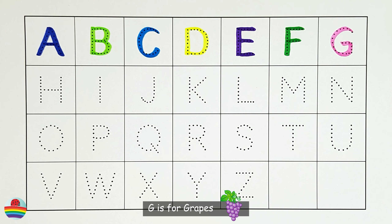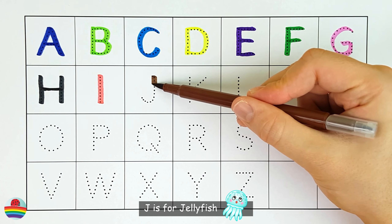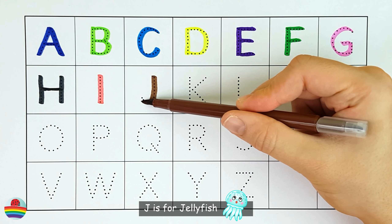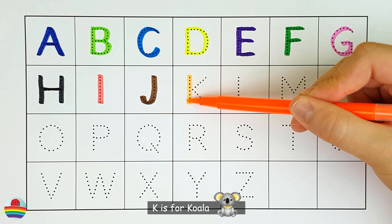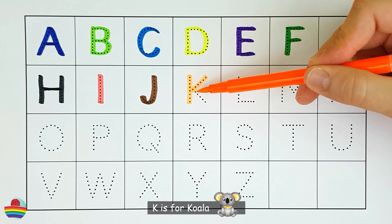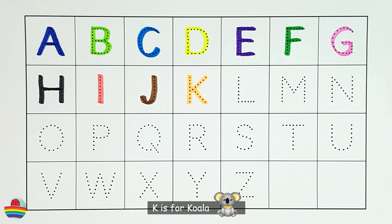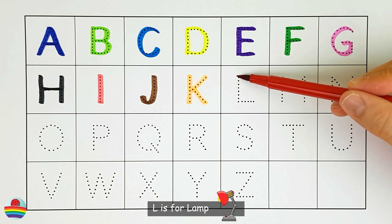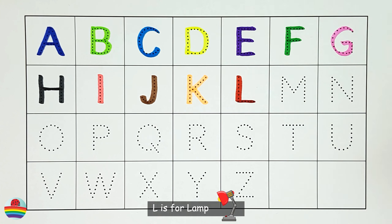I. I is for island. I. J. J is for jellyfish. J. K. K is for koala. K. L. L is for lamp. L.